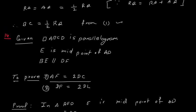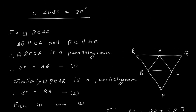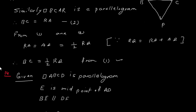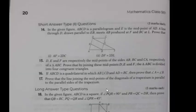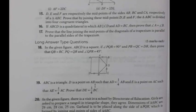Quite difficult — 14th question, three marks question. Now 15th question: D, E, and F are respectively the midpoints of sides AB, BC and CA of triangle ABC.